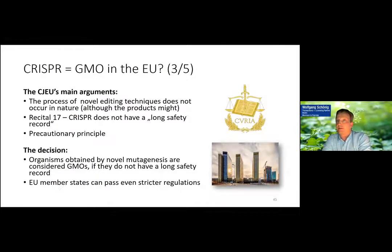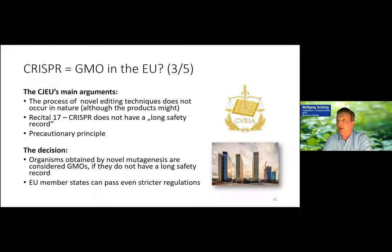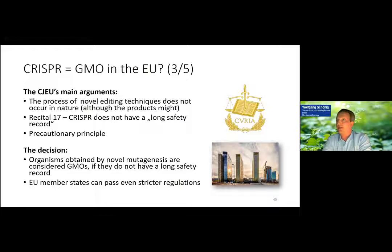Against this background, the court's main arguments when banning CRISPR were: the process of novel editing technologies like CRISPR does not occur in nature, although the products might. They put a lot of emphasis on Recital 17, saying CRISPR does not have a long safety record, so it cannot fall under the general exception of mutagenesis in Annex 1b. They supported this restrictive view with the precautionary principle. In a nutshell, the decision said organisms obtained by novel mutagenesis are considered GMOs if they do not have a long safety record, and CRISPR is a too new technology to fulfill that requirement.